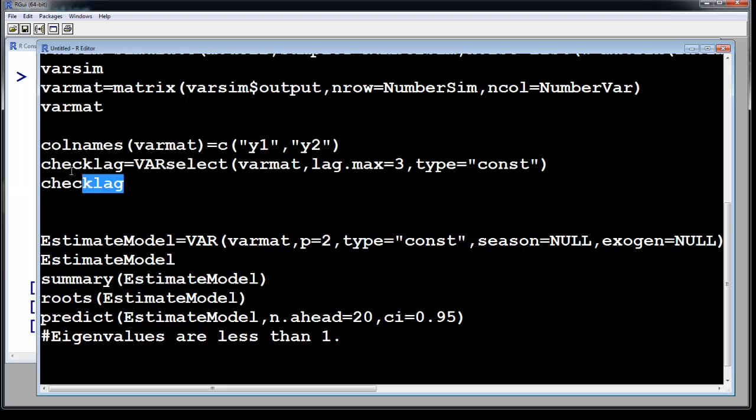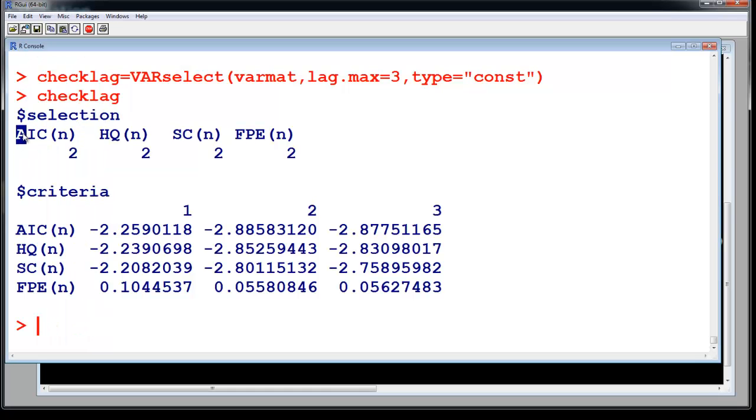Let us do this. So we run this and you see that AIC is two lags, HQ gives you two lags, SC gives you two lags, and FPE gives you two lags. So all of these criteria give you two lags each.